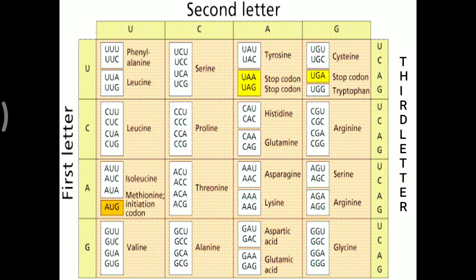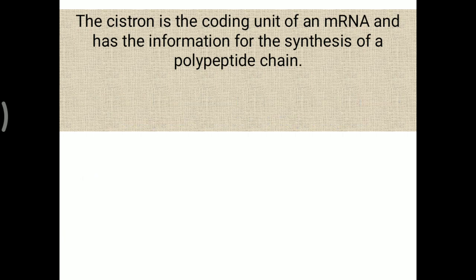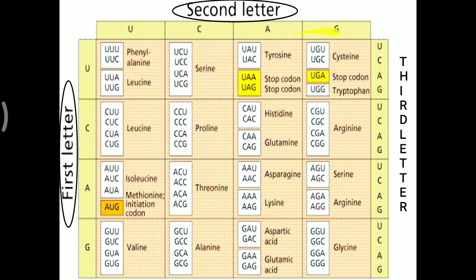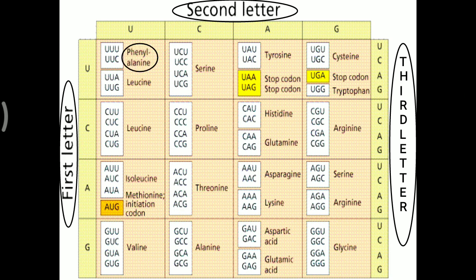Now, how is the genetic codon made up? We have seen there is a triplet codon. To understand how it is generated, the first letter is taken from U, C, A, or G; the second letter is also one of those four nitrogenous bases — U, C, A, G; and the third letter is also one of those four bases. These three combined make a codon.